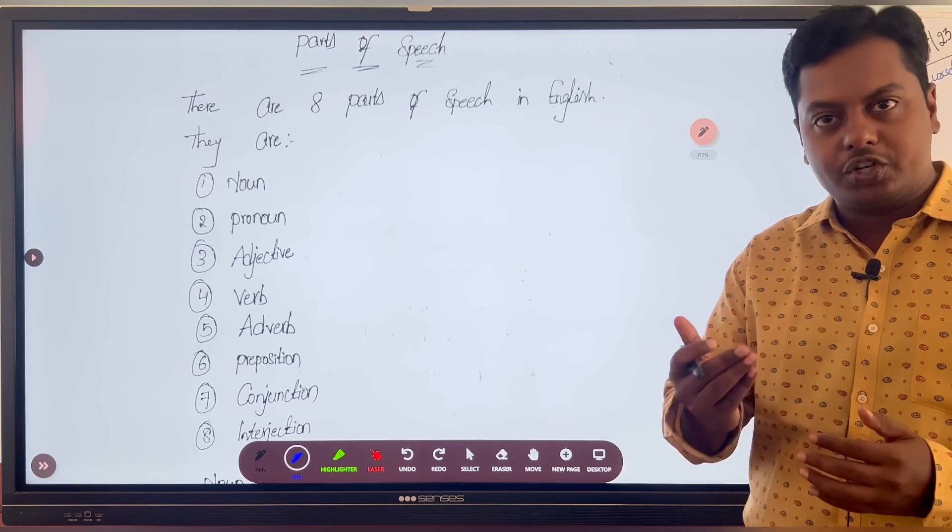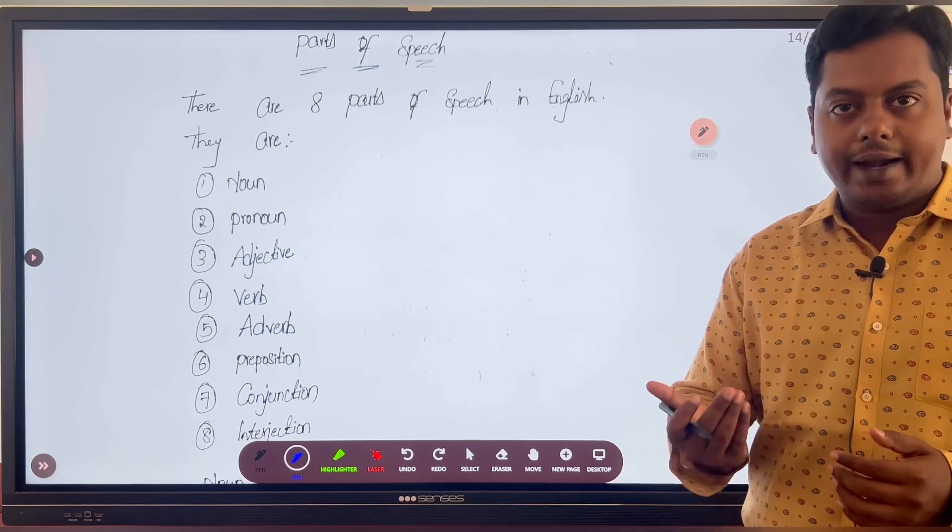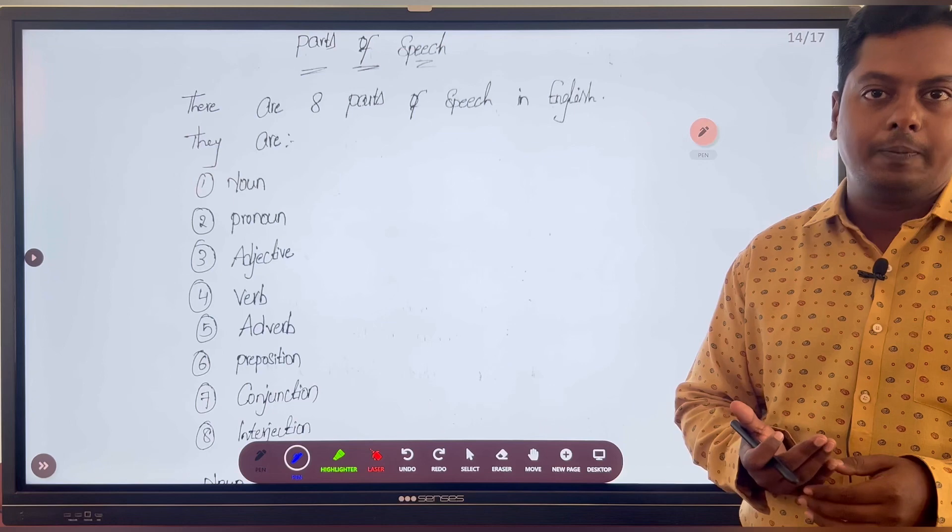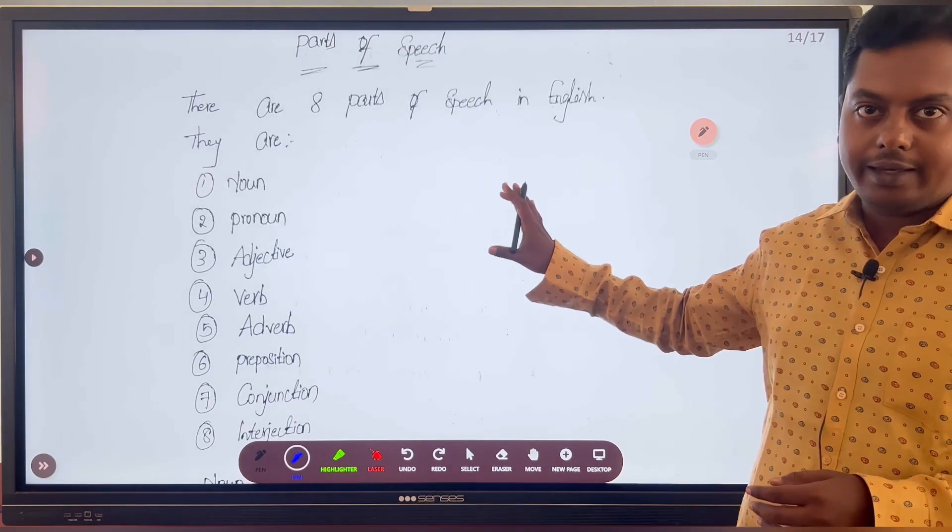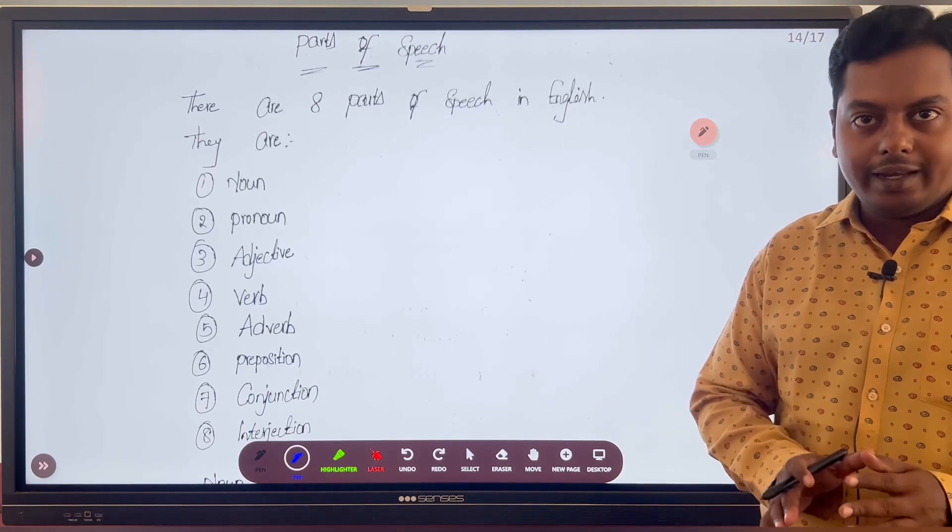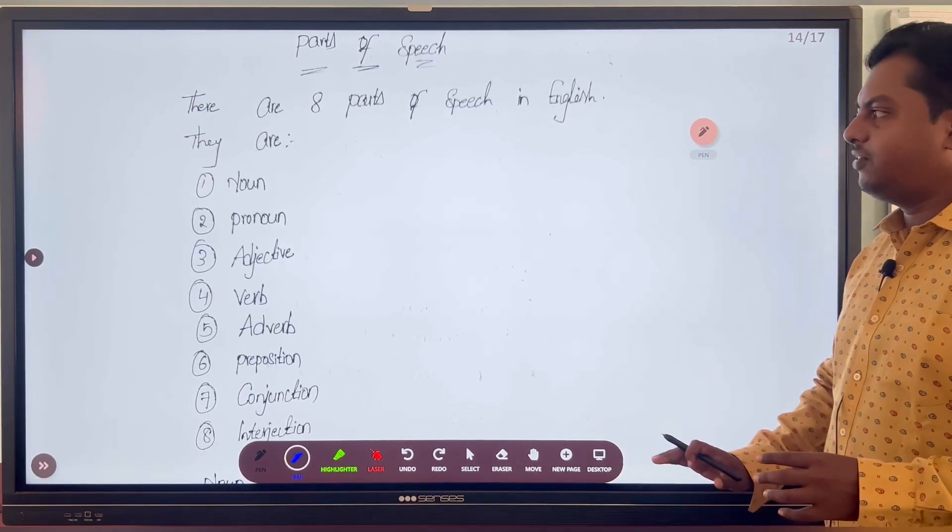Each and every word functions in a different category. The different functions are listed here, these eight parts of speech. So in English, we have eight parts of speech.